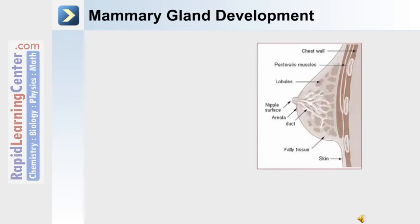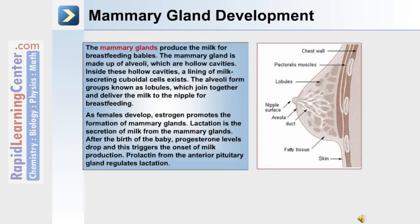The female reproductive tract also includes the mammary glands. The mammary glands are contained in the breast, which is made up of a nipple surrounded by an areola. Connected to the nipple are ducts, which move into the breast tissue and are connected to the lobules. The breast itself overlies the pectoralis muscles and the chest wall. The mammary glands produce milk for breastfeeding babies. The mammary gland is made up of alveoli, which are hollow cavities. Inside these hollow cavities, a lining of milk-secreting cuboidal cells exists. The alveoli form groups known as lobules, which join together and deliver milk to the nipple for breastfeeding. As females develop, estrogen promotes the formation of mammary glands.